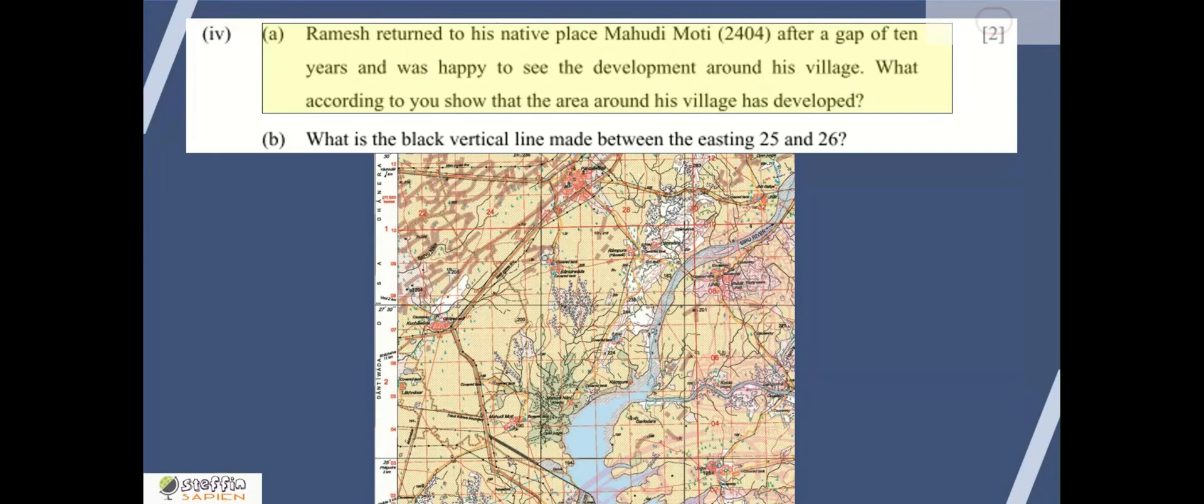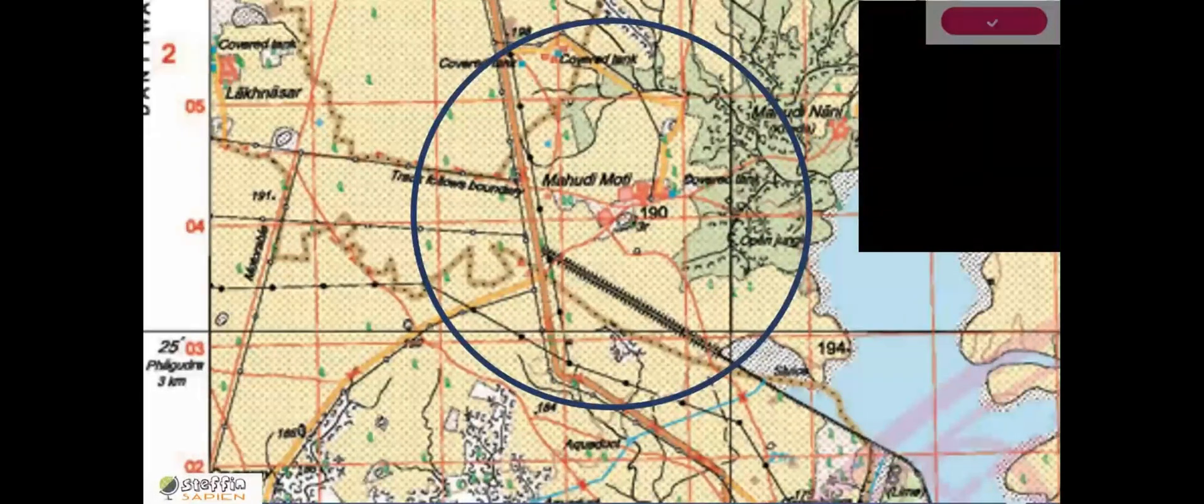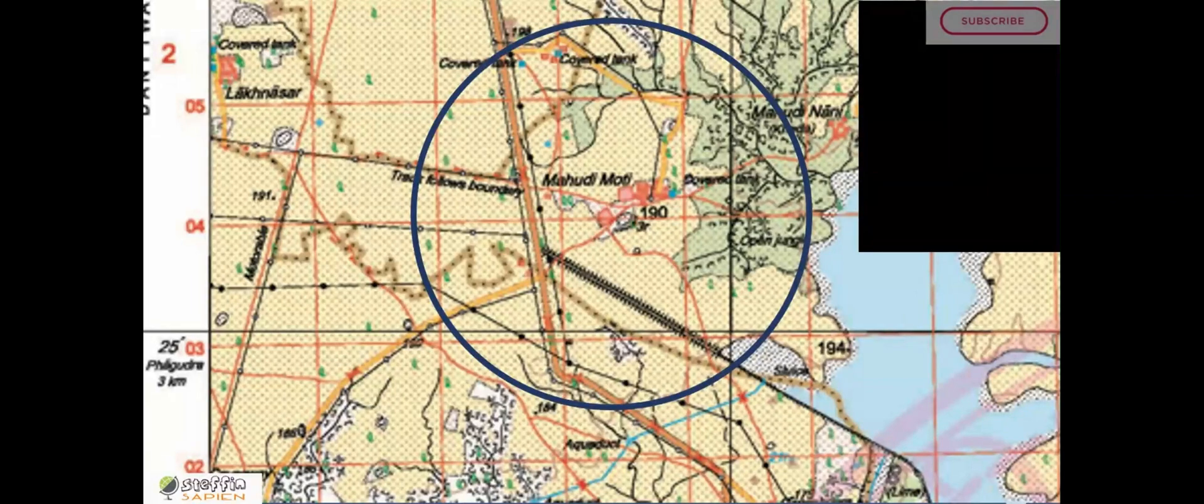Ramesh returned to his native place Mahudhi Moti after a gap of 10 years and was happy to see development around his village. What features show that the area around his village has developed? We need to identify the location of this village and need to look for the developments that probably happened in the last 10 years. Mahudhi Moti is located here right in the middle of the circle and approximately 1 kilometer around this can be taken as the region under Mahudhi Moti.